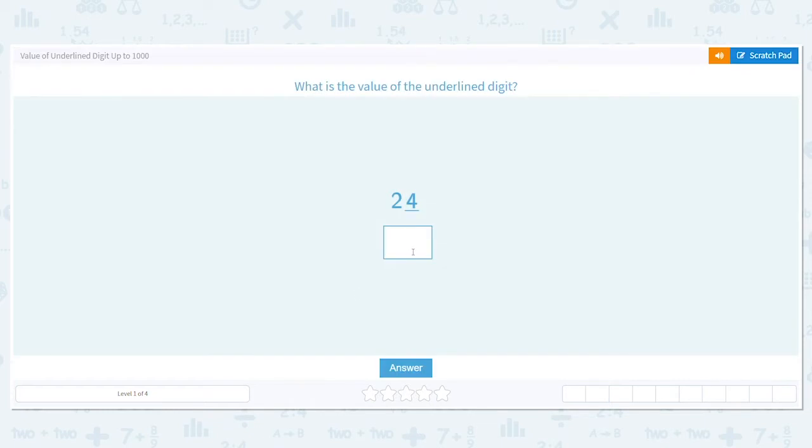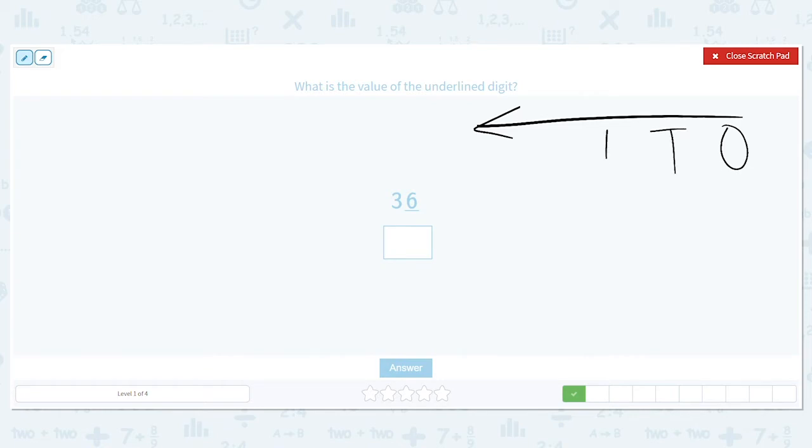Next we have 36. Same thing as before, and this is something you can draw to help yourself out at any time: ones, tens, hundreds, thousands. Thirty-six. Six is underlined. The six is in the ones place, so it just is what it is. You don't need to do anything. The value is six.